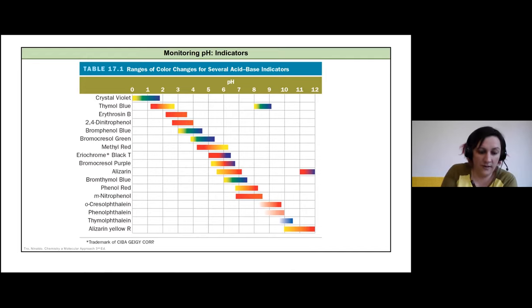This is a summary of some of our most common acid-base indicators that we use. Our phenolphthalein one is probably what you've used before. Crystal violet's a common one or methyl red, but all of these are options.